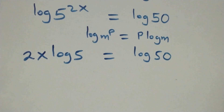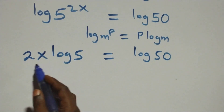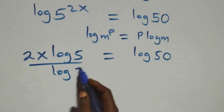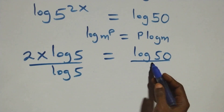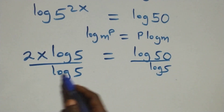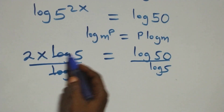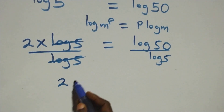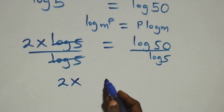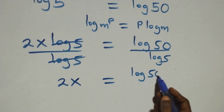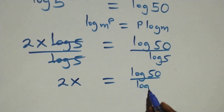From here we divide both sides by log 5 — divide this side by log 5 and also divide the other side by log 5. Log 5 cancels each other and we have 2x equals log 50 over log 5.